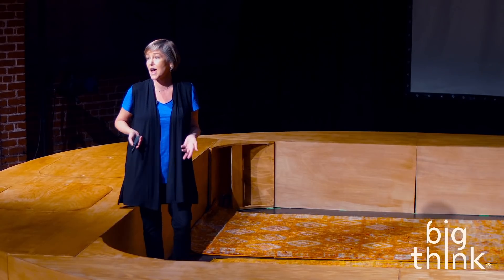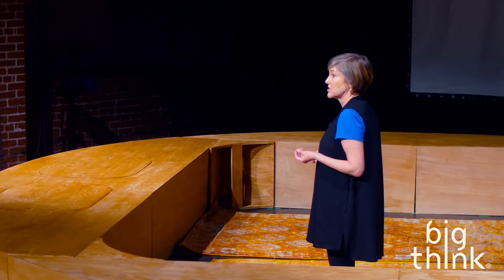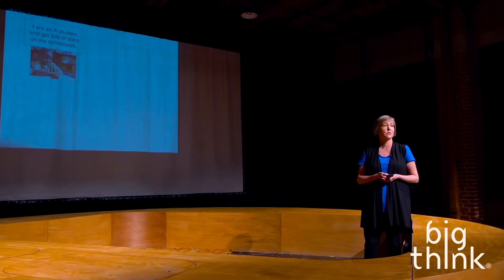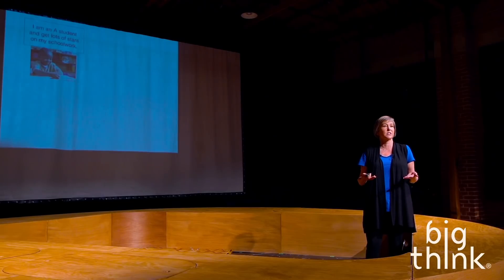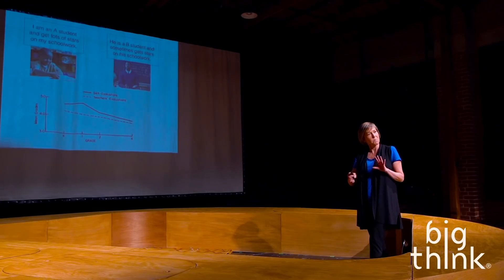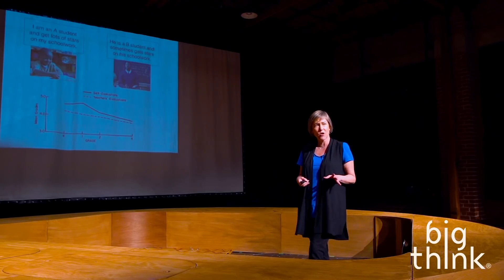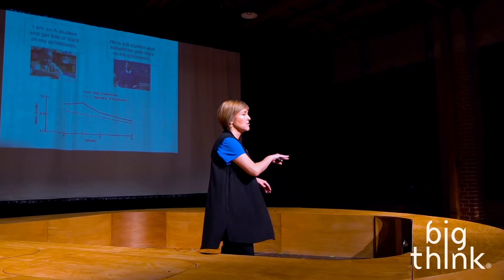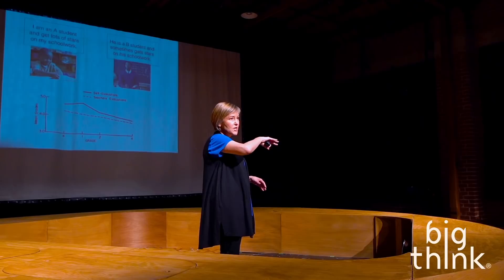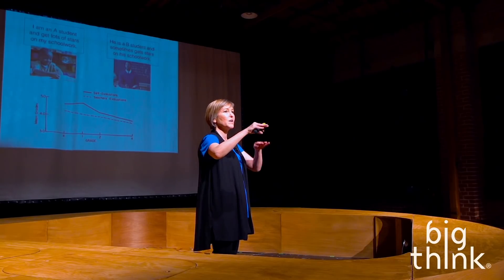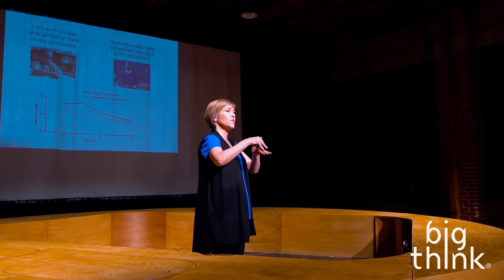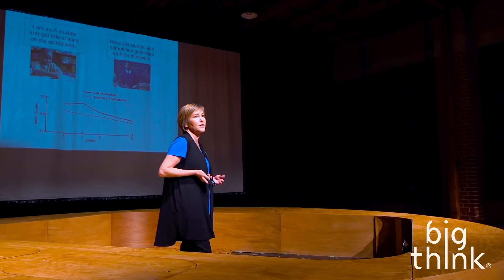Kids tend toward optimism — or at least positive interpretations. You can also look at this in the academic realm, where it can be evaluated more easily because you can get an adult evaluation of the situation. Up to roughly six years of age, you ask a child how they do in school and they say, 'I'm really good, I get mostly A's and lots of stars on my papers.' But the teacher has a different answer. What you see is an initial escalation in positivity, which then becomes more realistic over time.